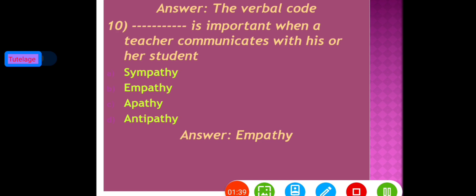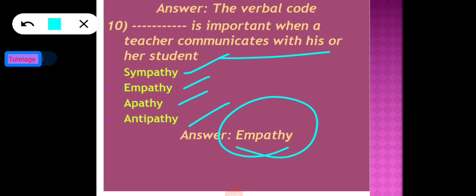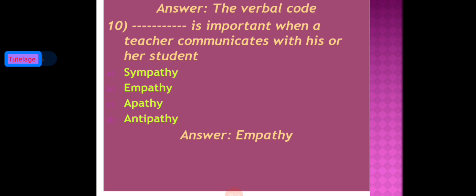The last question for this session is a fill-in-the-blank: dash is important when a teacher communicates with his or her students — sympathy, empathy, apathy, or antipathy. The correct answer is empathy, option B. Empathy is one of the most important qualities when a teacher communicates with students in the classroom, not sympathy, apathy, or antipathy.